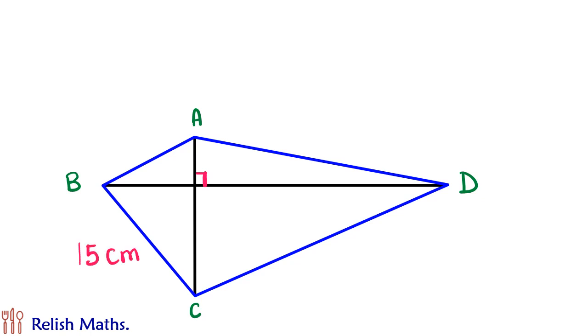The side BC is 15 cm, CD is 24 cm, AD is 20 cm and we have to find side AB.